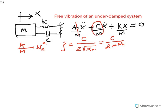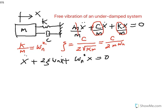So the normalized differential equation becomes: x double-dot plus 2ζωn times x-dot plus ωn squared times x equals zero. We are now solving this second-order differential equation using these new symbols.